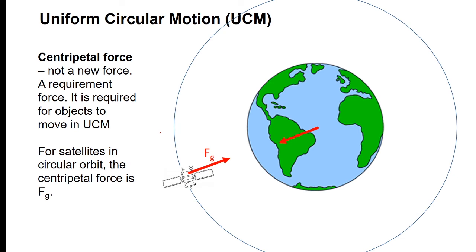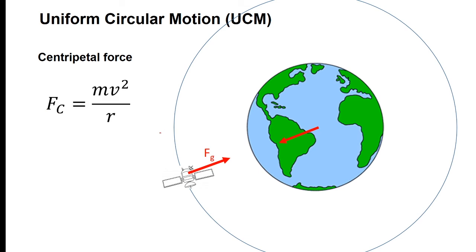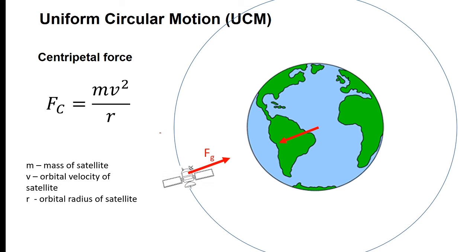This force causes the satellite to constantly change its velocity direction, making it a centripetal force. Because there is only this centripetal gravitational force acting on the satellite, the satellite moves in uniform circular motion and has a constant orbital speed. Centripetal force is not a new force — it is a requirement for objects to move in uniform circular motion. For satellites in circular orbit, the centripetal force is the gravitational force. The formula is Fc equals mv squared over r, where m is the mass of the satellite, v is the orbital velocity, and r is the orbital radius.